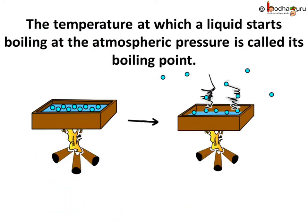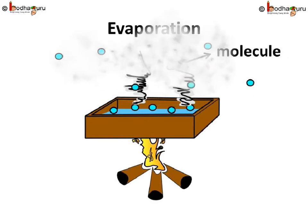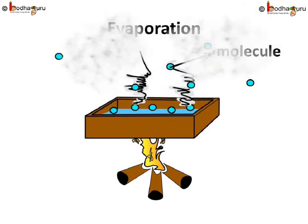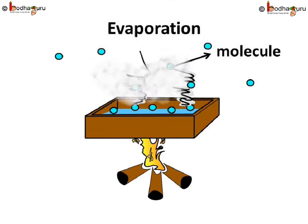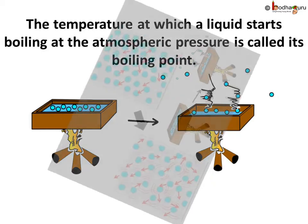When the liquid is heated, its particles keep gaining more and more energy, and there comes a time when they have enough energy to break free from the forces of attraction between each other. The temperature at which a liquid starts boiling at atmospheric pressure is called its boiling point. Right now, the heat is being used as the latent heat for overcoming the forces of attraction between the molecules, so the temperature is not changing.